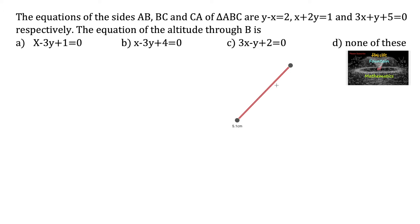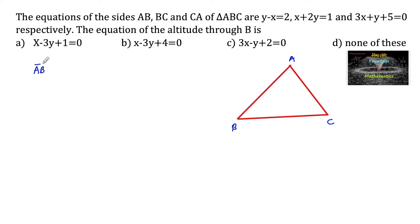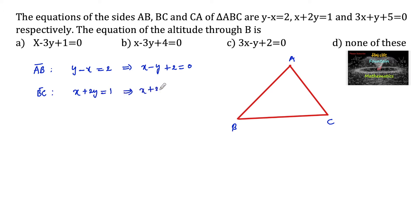So here let us consider triangle ABC. The equation of side AB is given as y minus x equals 2, or we can write x minus y plus 2 equals to 0. The equation of side BC is x plus 2y minus 1 equals to 0, and the equation of side CA is 3x plus y plus 5 equals to 0.